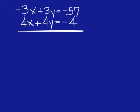Practice problem. Negative 3x plus 3y equals negative 57. And 4x plus 4y equals negative 4. Solve the system of equations.